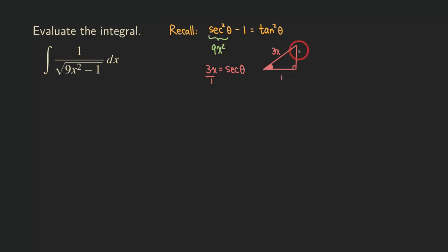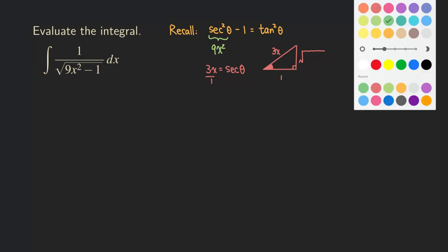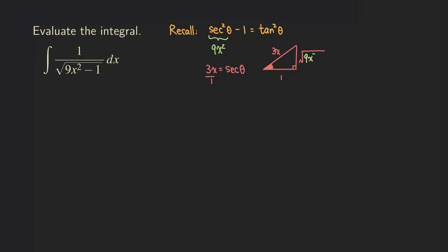Using the Pythagorean theorem, we can figure out the expression for the opposite side, which is the square root of 9x squared minus 1. The 9x squared comes from squaring the hypotenuse, and then we subtract the square of the adjacent side, which is just minus 1. That expression looks exactly like the expression inside our integrand.